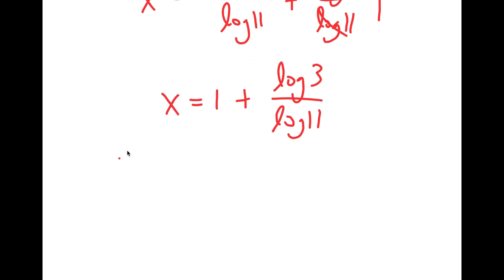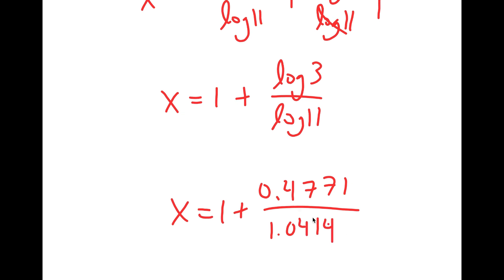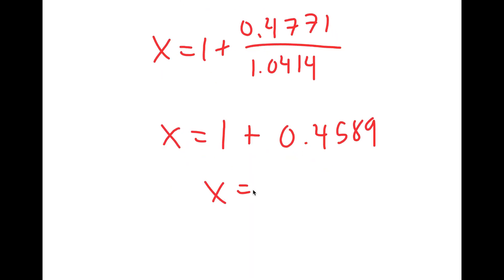Now, this is equal to 1 plus 0.4771 over 1.0414, which is equal to 1 plus 0.4589, meaning x is equal to 1.4589.